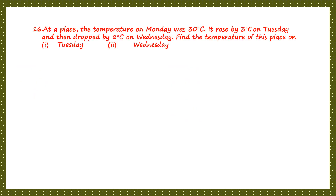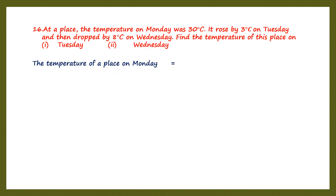Question 16. At a place, the temperature on Monday was 30 degrees Celsius. It rose by 3 degrees Celsius on Tuesday, then dropped by 8 degrees Celsius on Wednesday. We need to find the temperature on Tuesday and Wednesday. On Monday it was 30 degrees; it rose means it went up by 3 degrees on Tuesday, then dropped by 8 degrees on Wednesday.